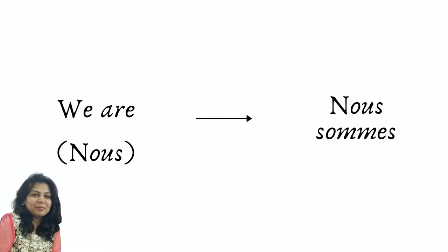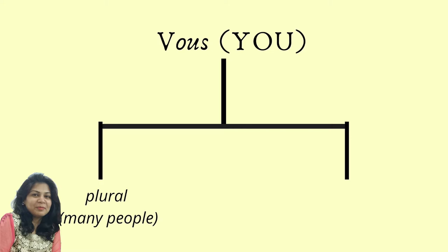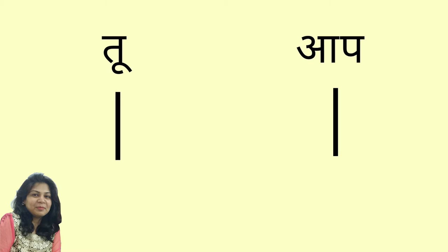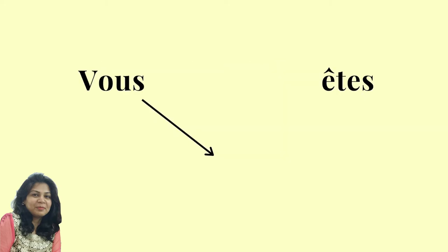If I want to address you, okay, you can be used in two cases. One, it could be for a plural, for addressing many people, or it could be addressing one person and that is out of respect. As in Hindi we have two versions of you, tu and aap. So you all are will be vous êtes. Here we are going to link the sound of s which is in vous and e which is in êtes and it will be together pronounced as z, vous êtes.